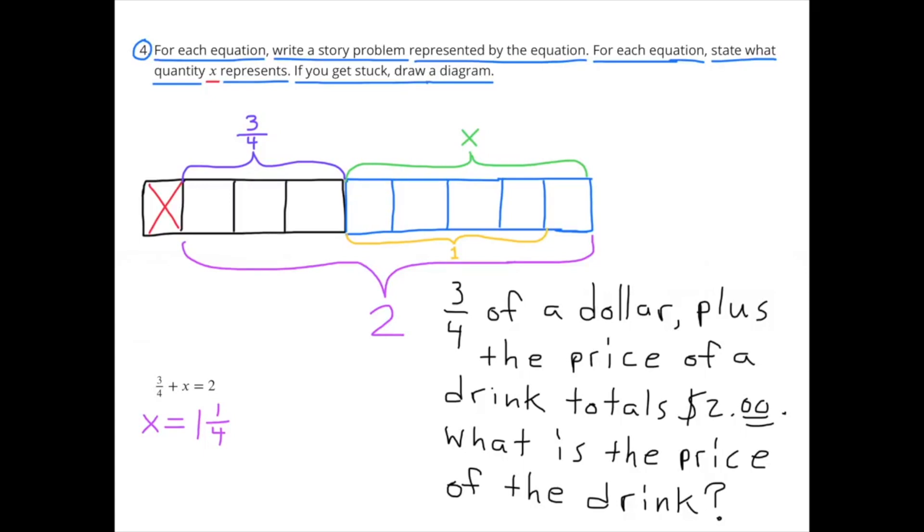Anyway, in this diagram, X represents 1 and 1 fourth, or 5 out of 4.